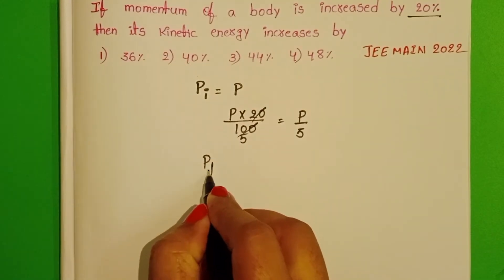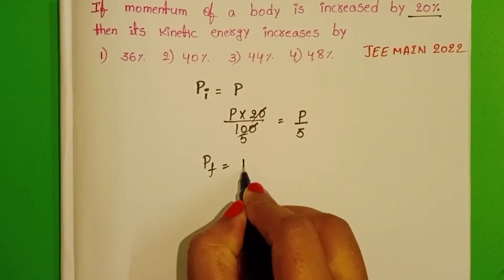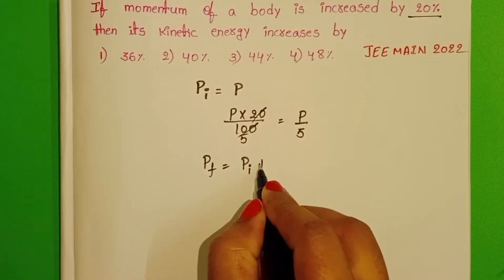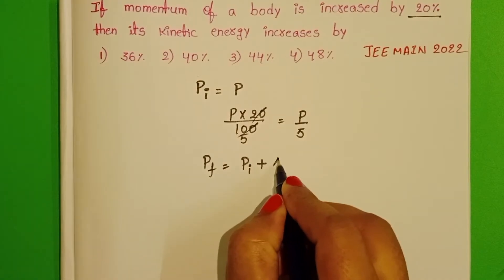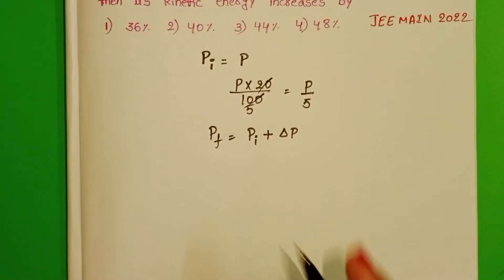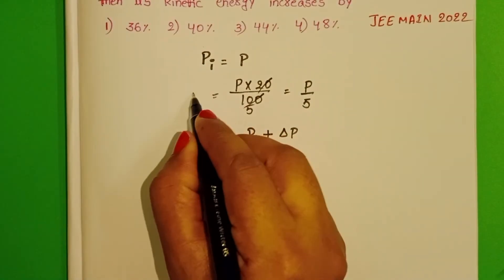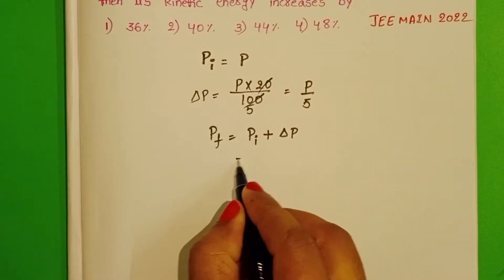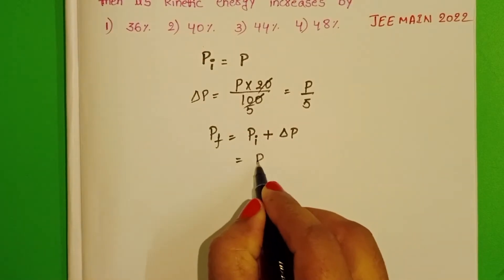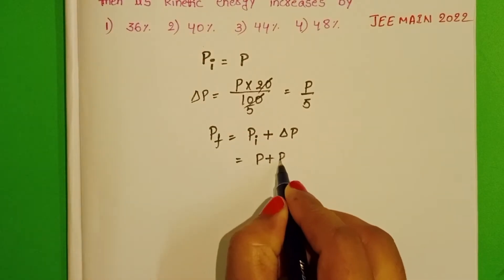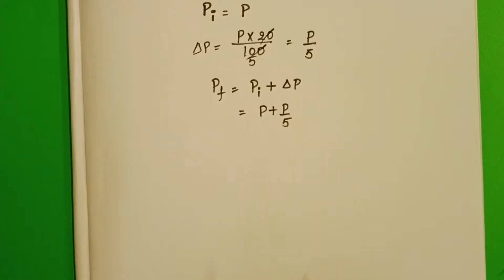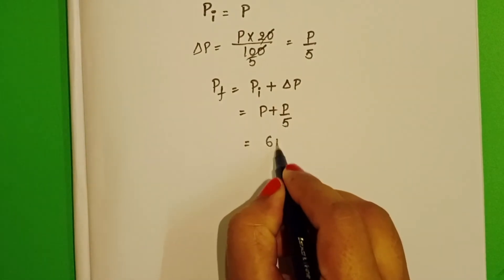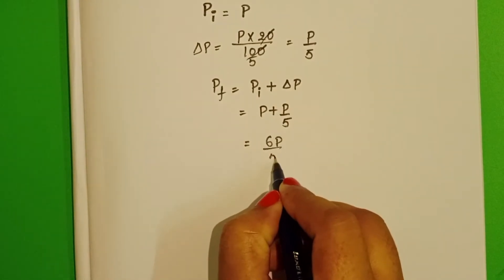Now, final momentum equals initial momentum plus increase in momentum, that is P plus P by 5, which gives 6P by 5.